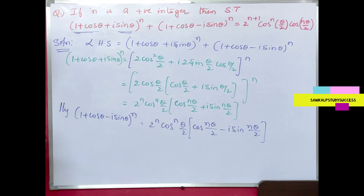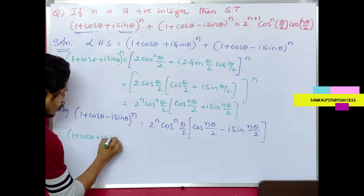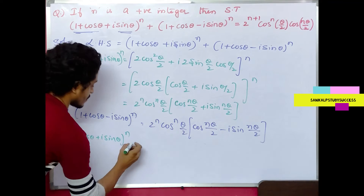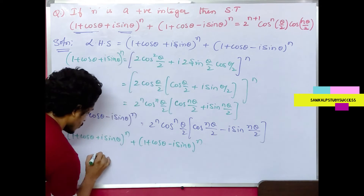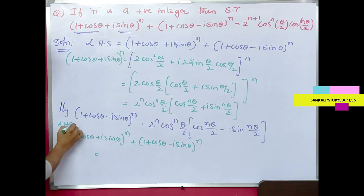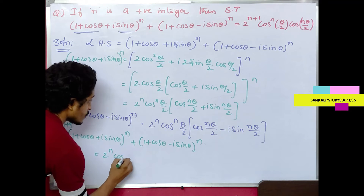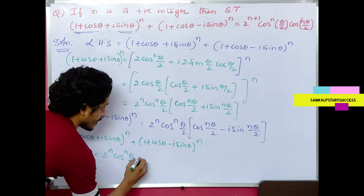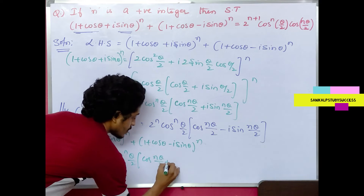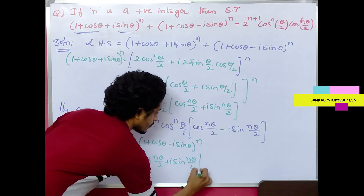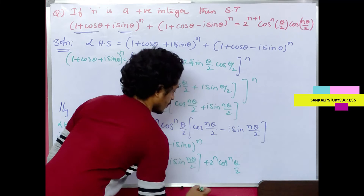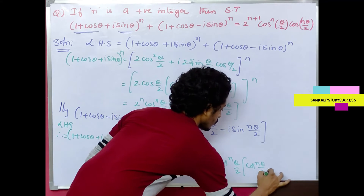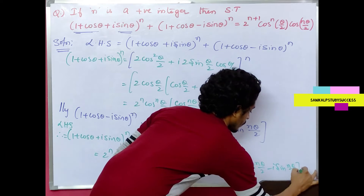Adding the two terms: (1 + cosθ + i sinθ)^n + (1 + cosθ - i sinθ)^n equals 2^n · cos^n(θ/2) · (cos(nθ/2) + i sin(nθ/2)) plus 2^n · cos^n(θ/2) · (cos(nθ/2) - i sin(nθ/2)).